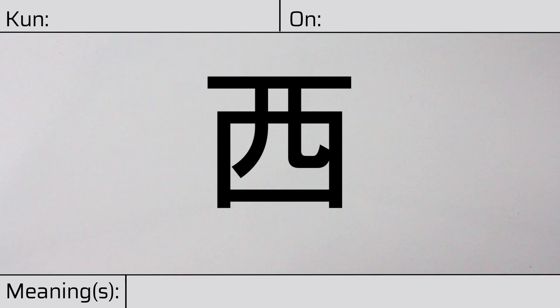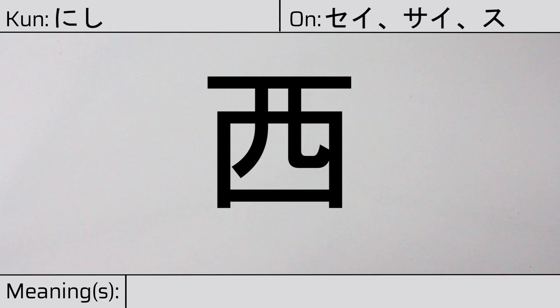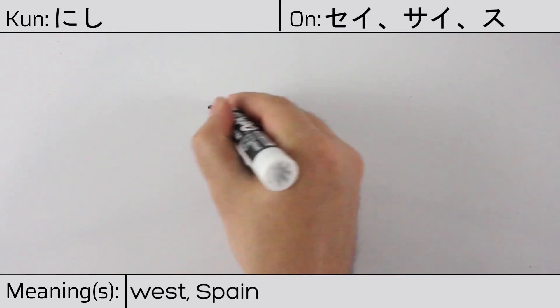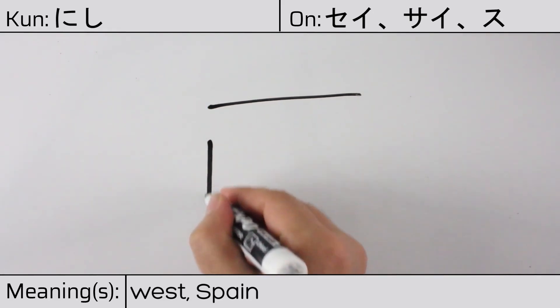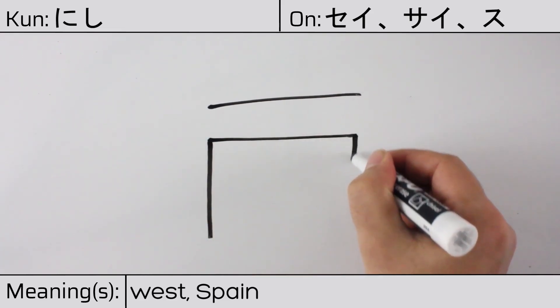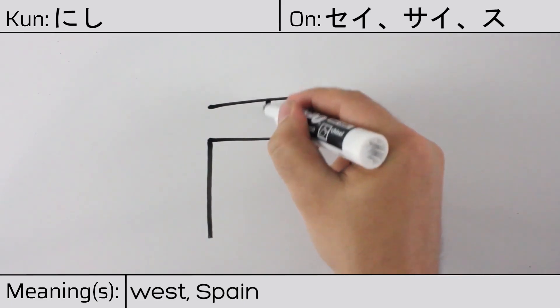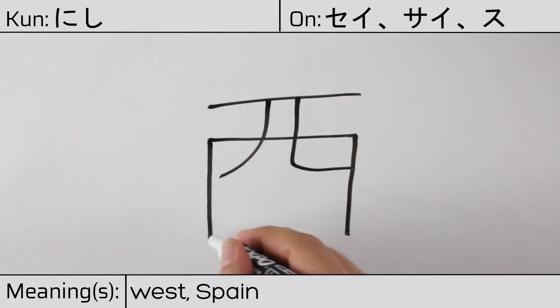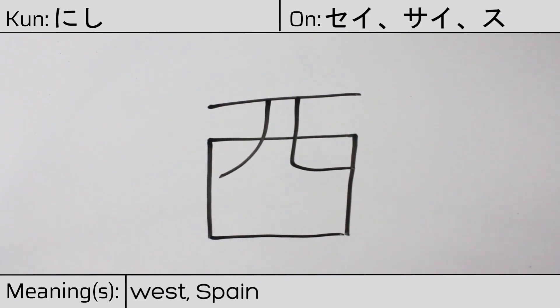Welcome to this lesson on Japanese kanji. Today, we'll be discussing this character. This kanji has kunyomi or Japanese reading of nishi, and it has onyomi or Chinese readings of sei, sai, or su. This character has the meanings west or Spain. Here is the stroke order.